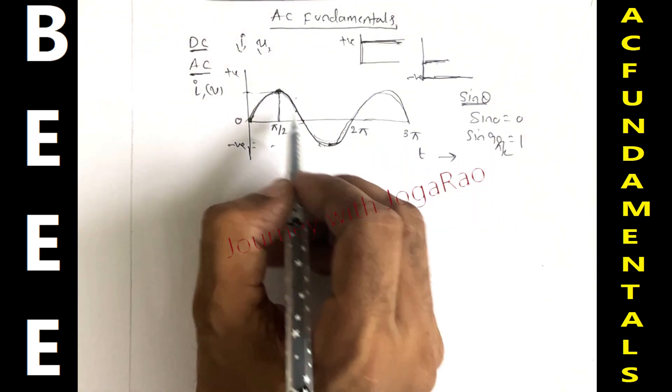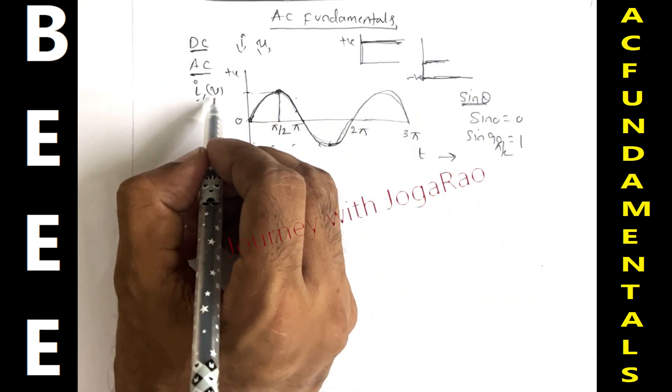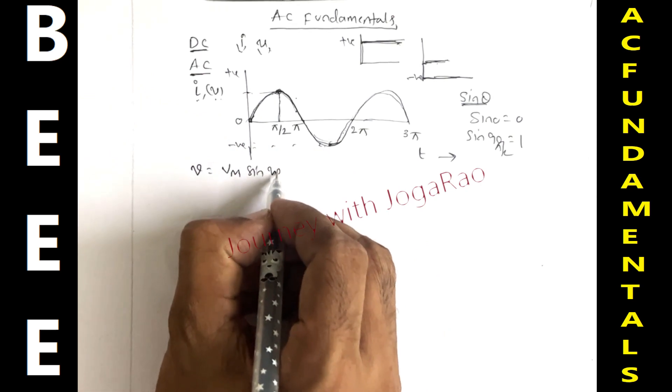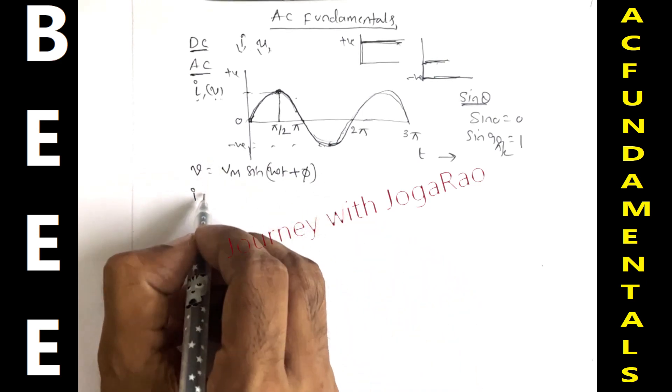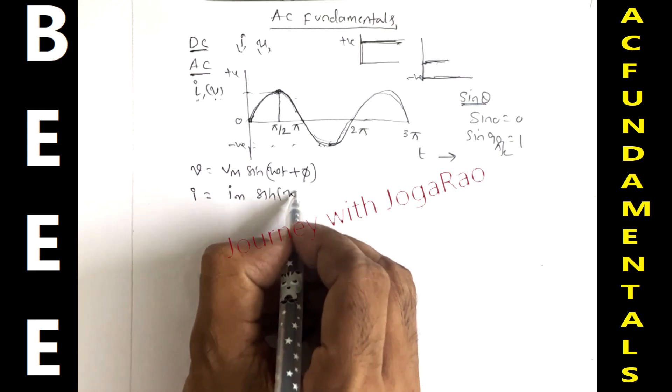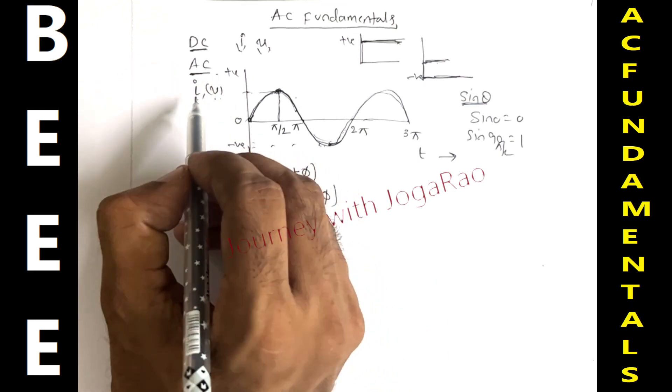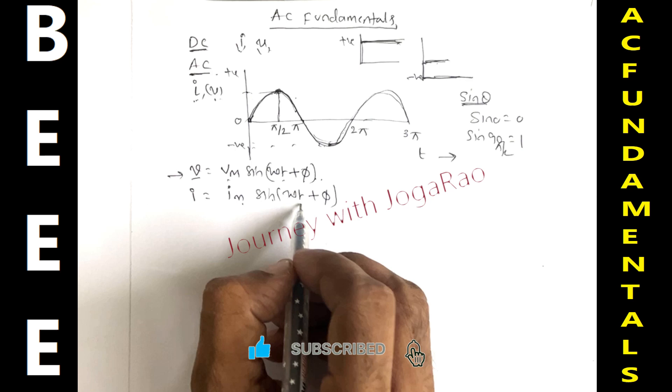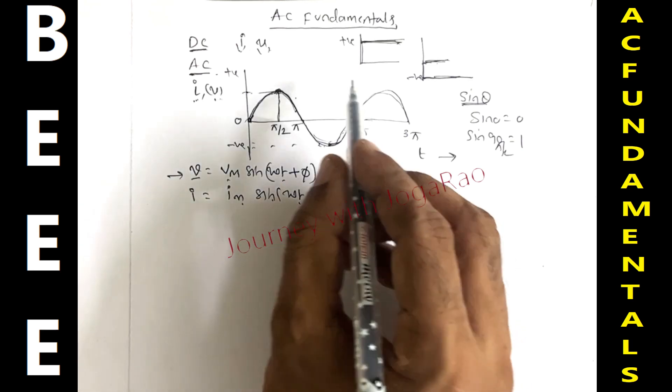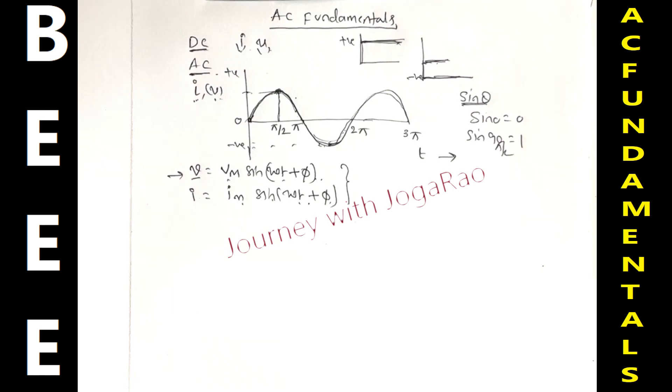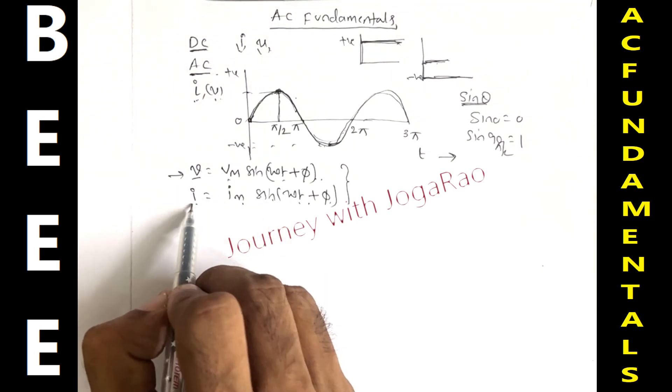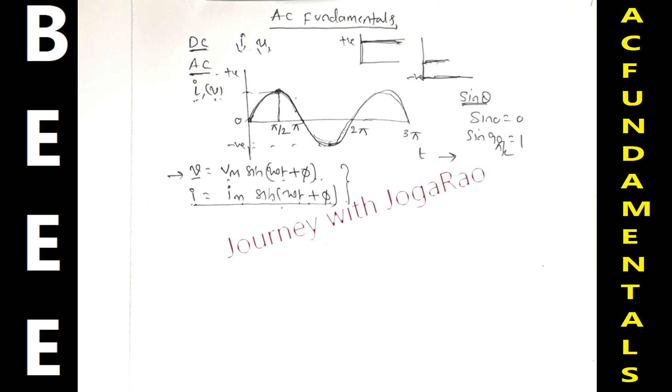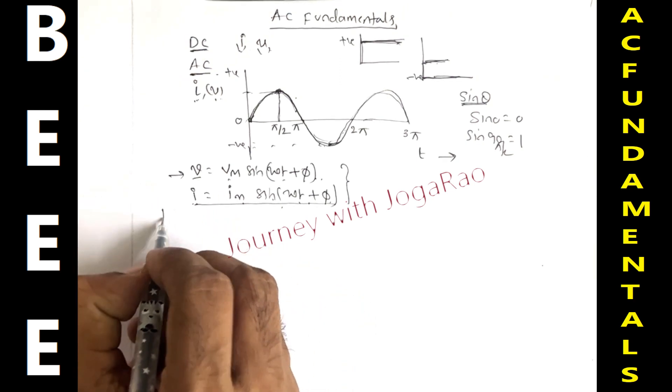So this waveform is the representation of either current flow or voltage. Suppose v equals Vm sin omega t plus phi angle. Current i equals Im sin omega t plus phi. So AC fundamentals, mathematically v equals Vm sin omega t plus phi, i equals Im sin omega t plus phi.